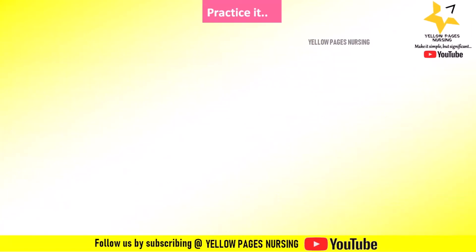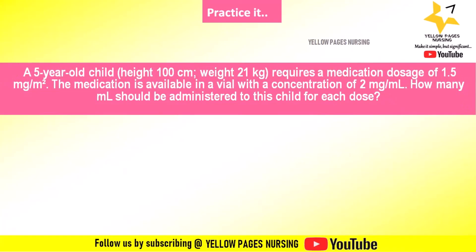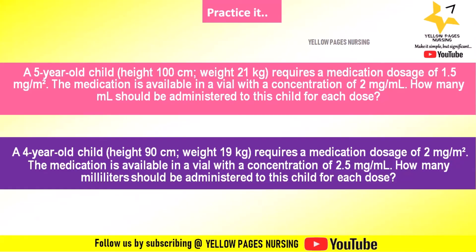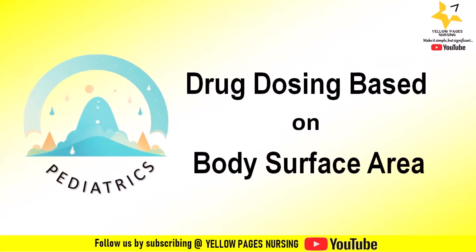Now a few examples for your practice. First: a five-year-old child, height 100 centimeters, weight 21 kilograms, requires a medication dosage of 1.5 milligrams per meter squared; the medication is available in a vial with a concentration of 2 milligrams per ml — how many ml should be administered for each dose? Second: a four-year-old child, height 90 centimeters, weight 19 kilograms, requires a dosage of 2 milligrams per meter squared; the medication has a concentration of 2.5 milligrams per ml — how many milliliters per dose? You can do the calculations and mention the answers in the comment box.